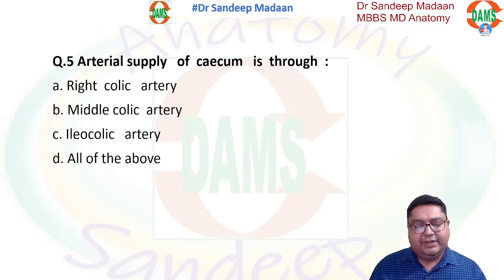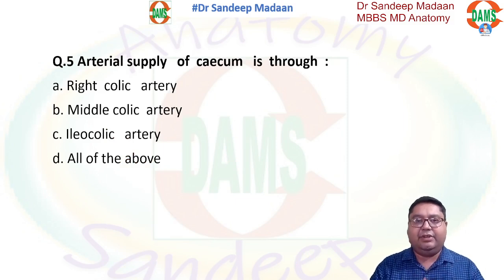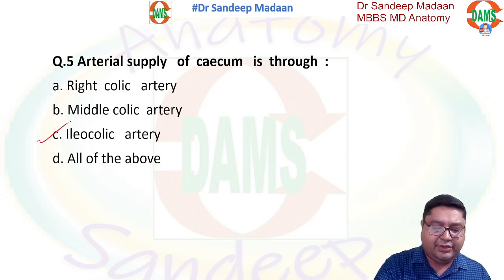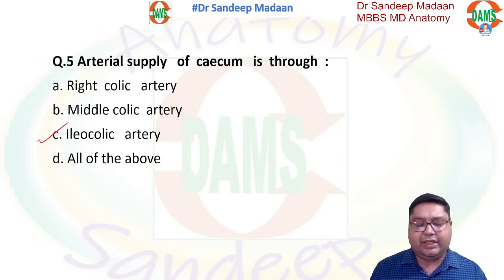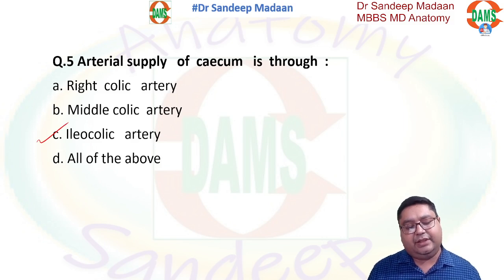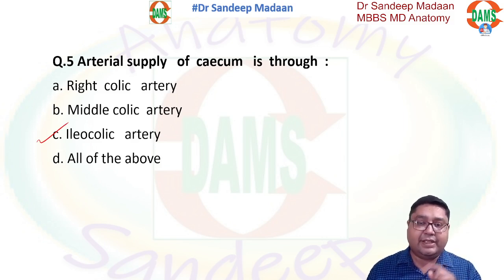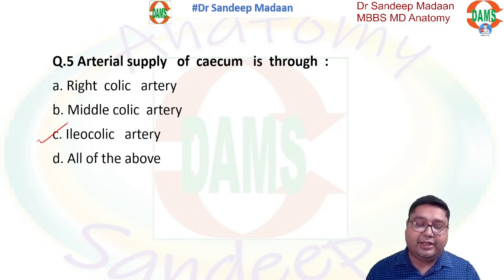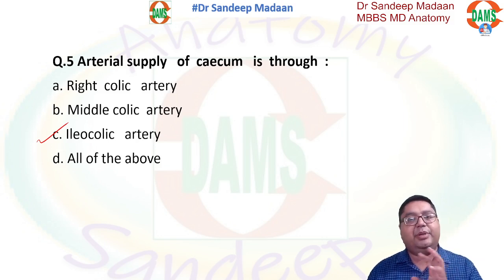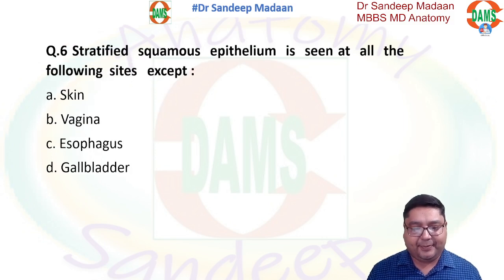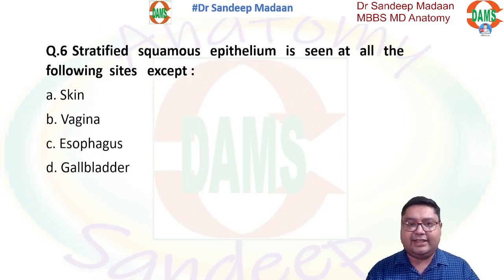Next question: arterial supply of the cecum. The cecal artery — we have two: anterior cecal and posterior cecal artery. Both are branches of the ileocolic artery, so that is the answer. The ileocolic artery also gives a branch to the appendix called the appendicular artery, but the accessory appendicular artery is a branch of the posterior cecal artery.